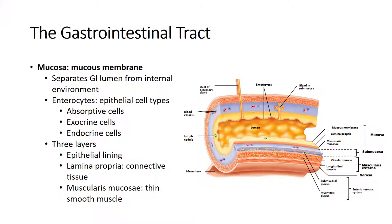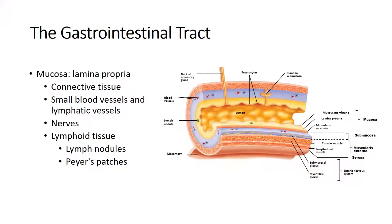The three layers of the mucosa are: the epithelial layer, which is the cells right at the lumen; the lamina propria, which is the connective tissue layer containing small blood vessels and small nerves that feed the epithelia; and the muscularis mucosa, the thin smooth muscle layer. Within the lamina propria we also find lymphatic tissue including lymphatic nodules and Peyer's patches — the name for lymphatic aggregates found in the intestines.